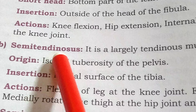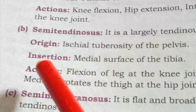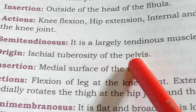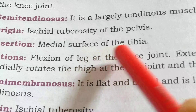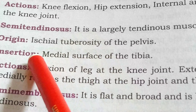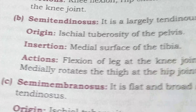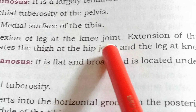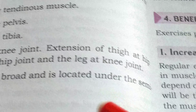Semitendinosus is a largely tendinous muscle. Its origin is the ischial tuberosity of the pelvis. Its insertion is the medial surface of the tibia — so it stretches from the ischial tuberosity to the tibia. The action is flexion of the leg at the knee joint — we can rotate, bend, and fold the leg with the help of this muscle.